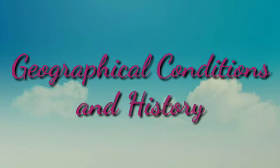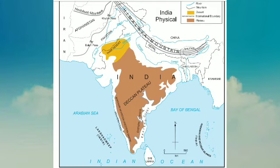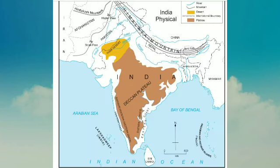Now, with these seven points, we covered geographical conditions and history. Next point: geographical features of India. India is a large country having the Himalayas to its north, the Bay of Bengal to its east, the Arabian Sea to its west, and the Indian Ocean to its south. Barring the Andaman and Nicobar Islands in the Bay of Bengal and Lakshadweep in the Arabian Sea, India has a contiguous geographical area. Pakistan and Bangladesh were parts of India before 15th August 1947.